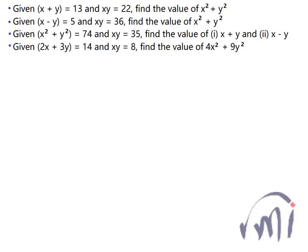Here we have four problems. In the first one we are given the value of x plus y and xy, and we have to find the value of x squared plus y squared. In the second one we are given the value of x minus y and xy, and we have to find the value of x squared plus y squared. In the third one we are provided with the values of x squared plus y squared and xy, and we have to find the values of x plus y and x minus y. In the fourth one we are provided with the value of 2x plus 3y and xy, and we have to find the value of 4x squared plus 9y squared.